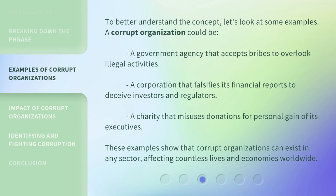To better understand the concept, let's look at some examples. A corrupt organization could be a government agency that accepts bribes to overlook illegal activities, a corporation that falsifies its financial reports to deceive investors and regulators, or a charity that misuses donations for personal gain of its executives. These examples show that corrupt organizations can exist in any sector, affecting countless lives and economies worldwide.